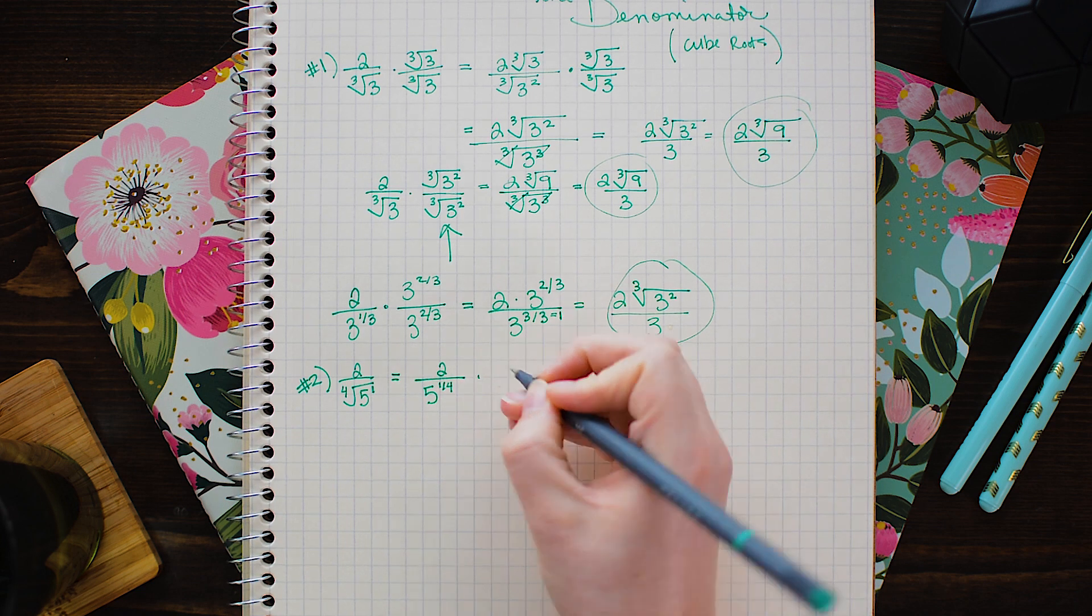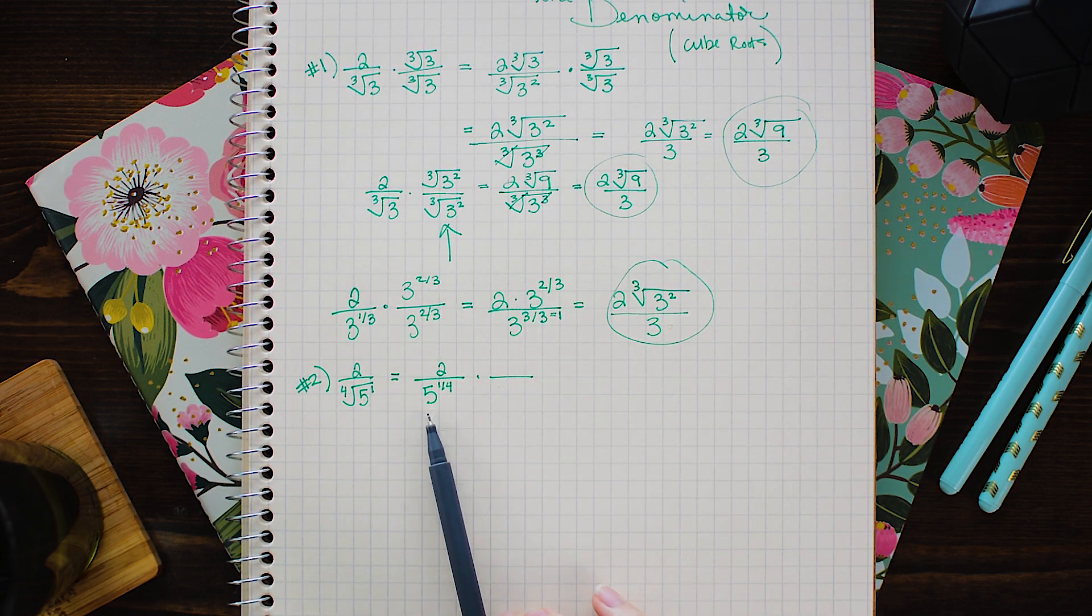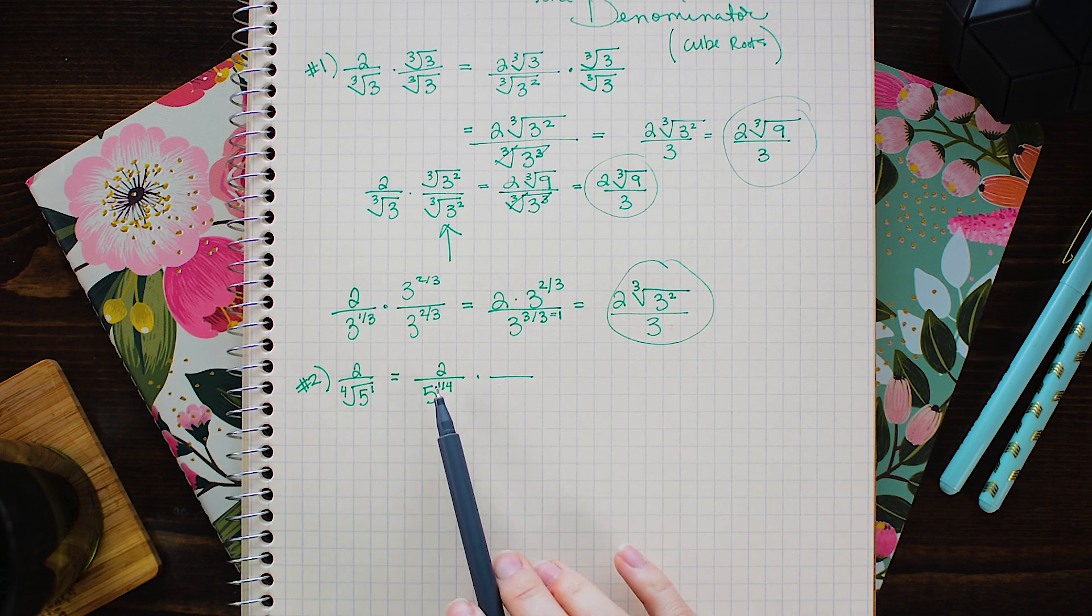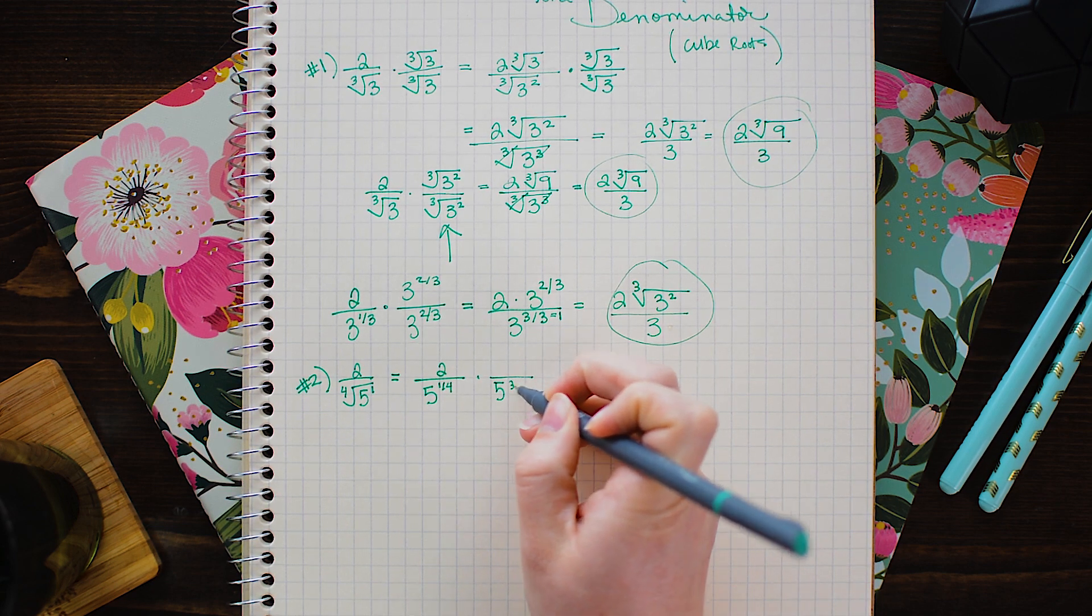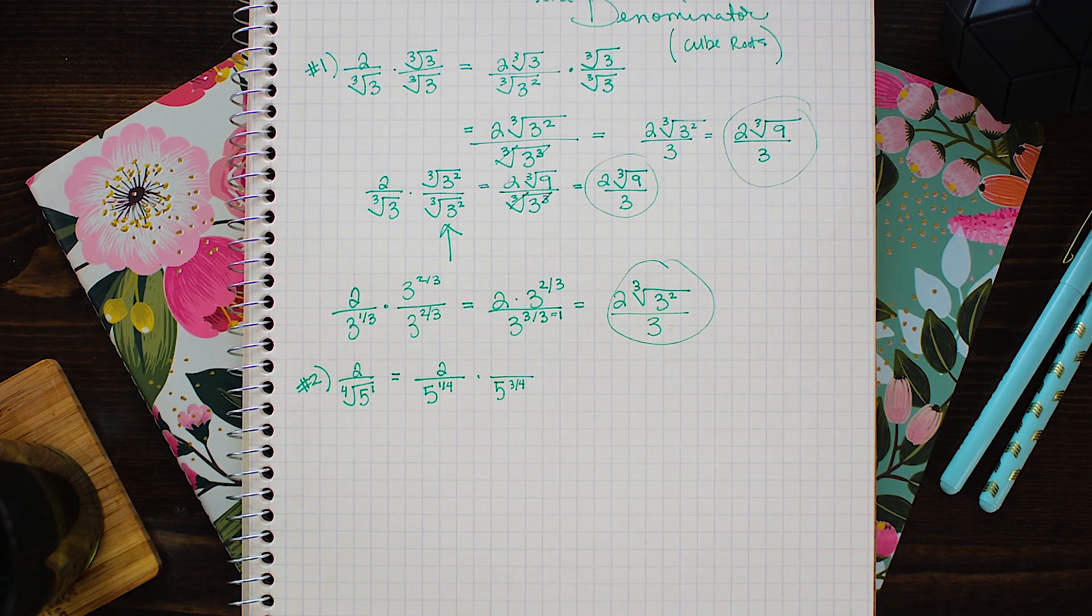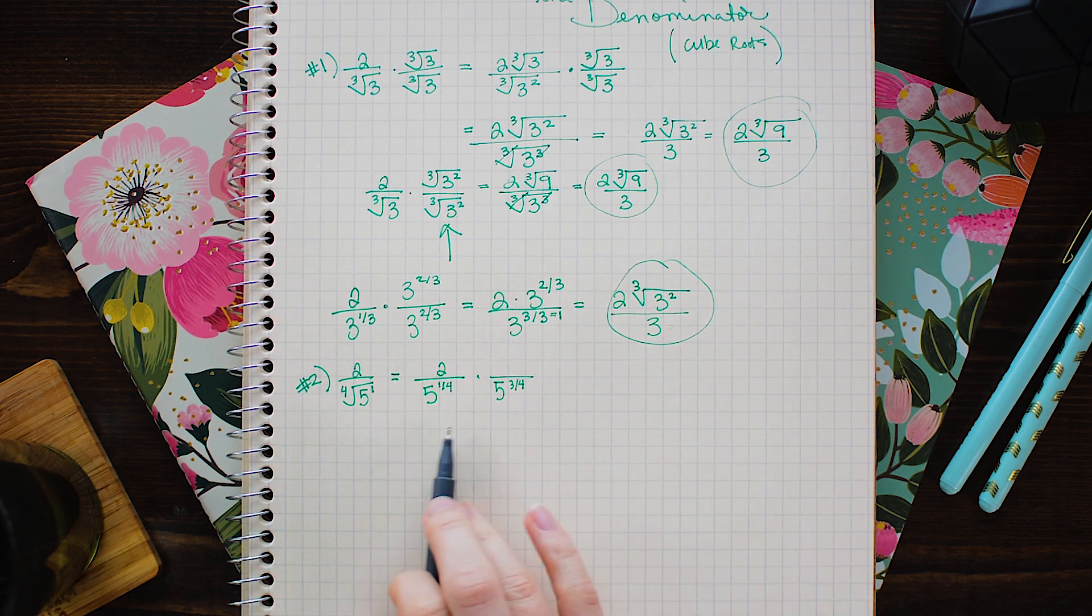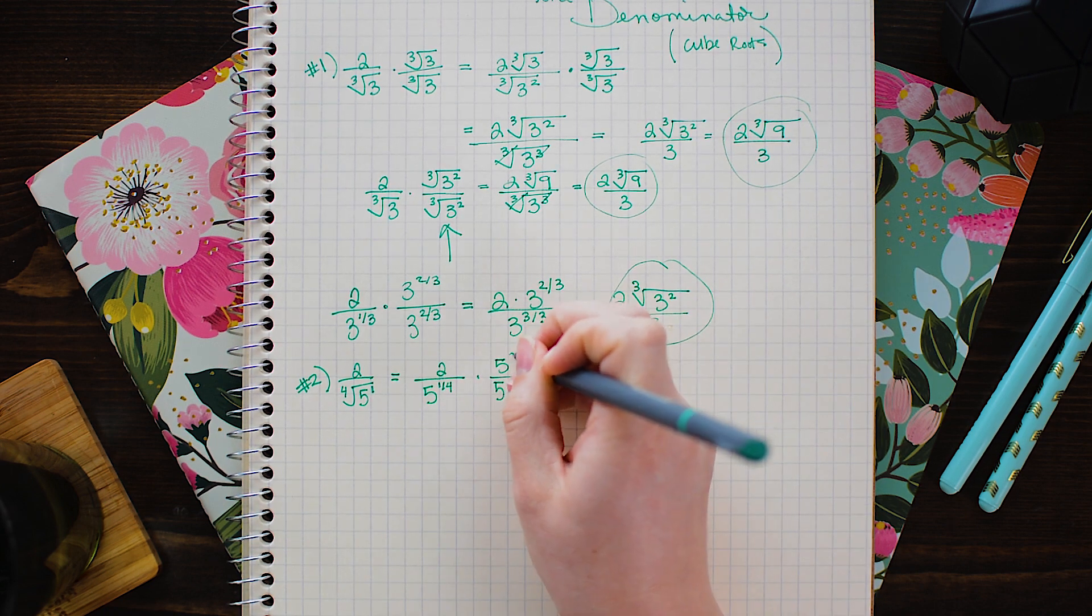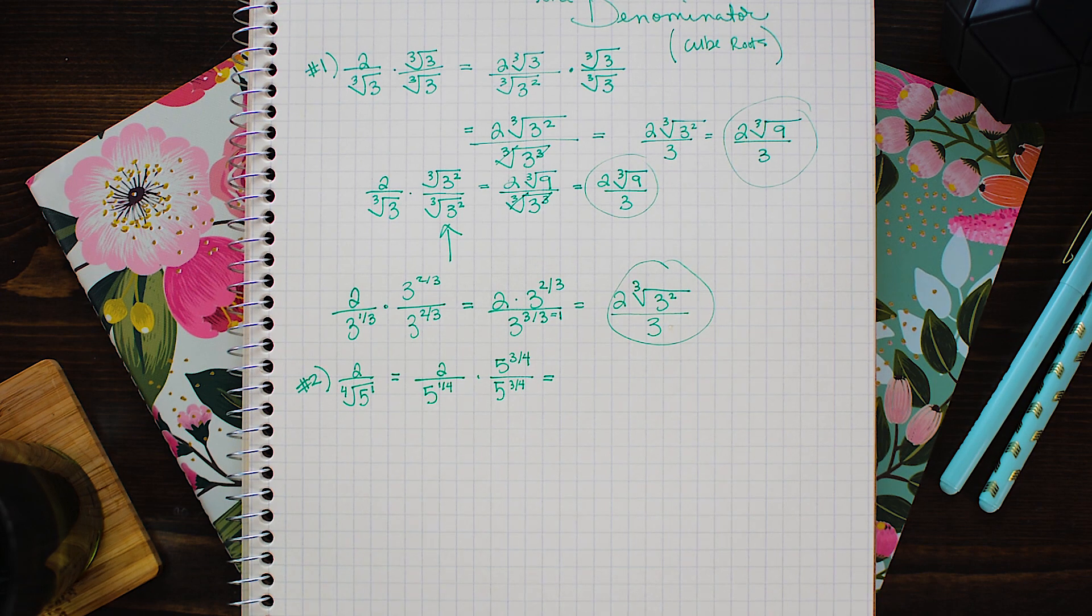Now I need to multiply by a value that will make 5 to the 1 4th equal to 5 to the 4 4ths. So I'm going to multiply by 5 to the 3 4ths power. And like we've been doing we need to multiply the numerator and denominator by both the same number.